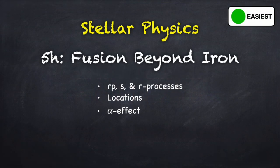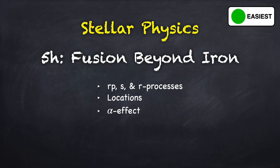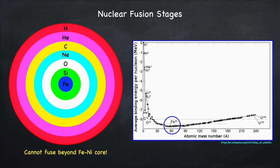Welcome to Stellar Physics 5H. In this video I will cover fusion beyond the iron peak. This essentially means the fusion of elements from iron all the way to uranium. I rated the physics level in this video as easiest. Let's start off by briefly recapping what we found in the previous videos in this chapter.